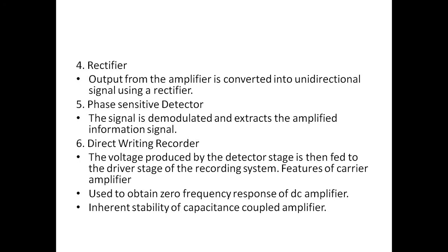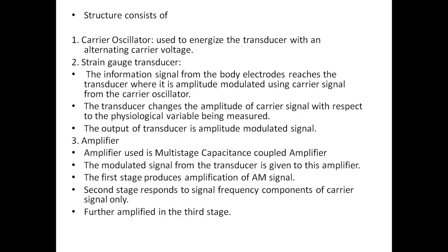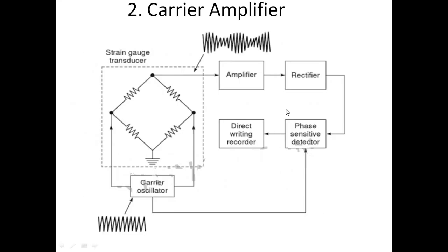Features of the carrier amplifier: it is used to obtain zero-frequency response like a DC amplifier, with the inherent stability of a capacitance coupled amplifier. The output is fed to a direct writing recorder.